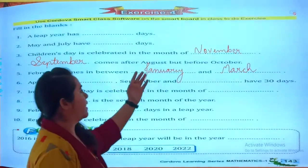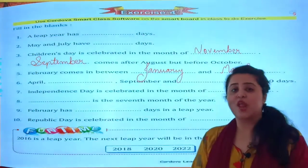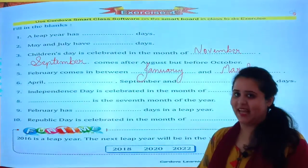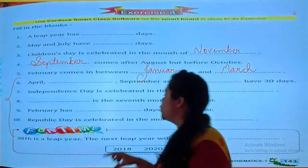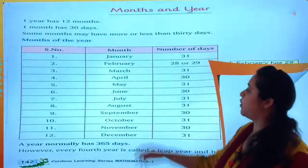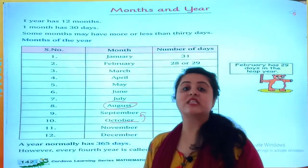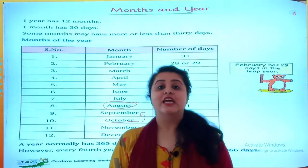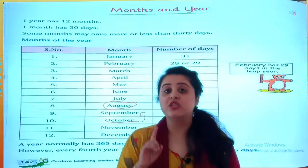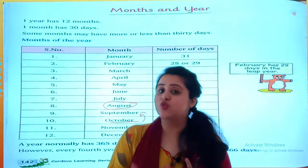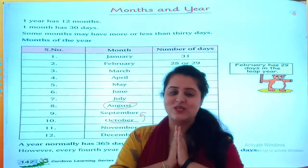April, June, September and November are months with 30 days. Now it's your worksheet time — you will be solving it. You can take the help of this table. So students, here we complete our topic of months and year. If you have any doubt, you are free to contact. You have to remember and learn the spellings. Bye students, take care. God bless you.